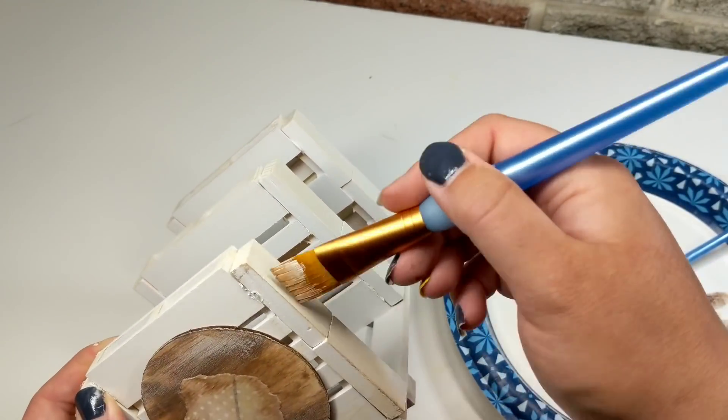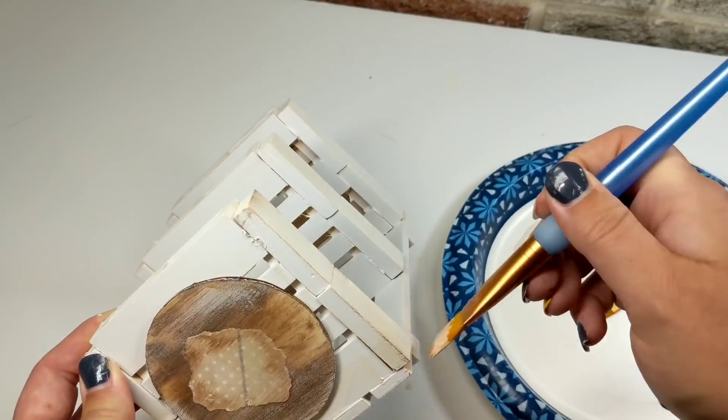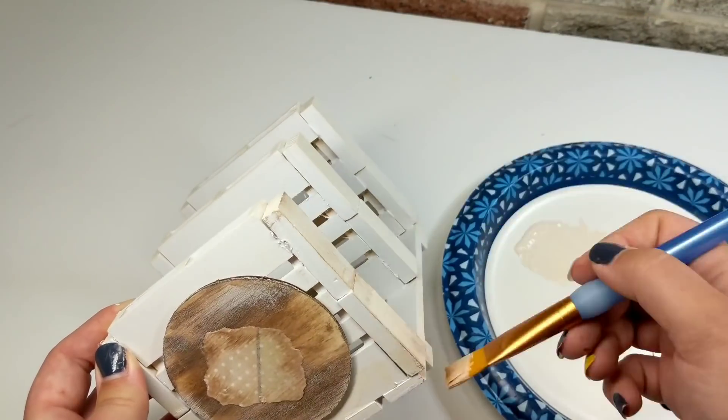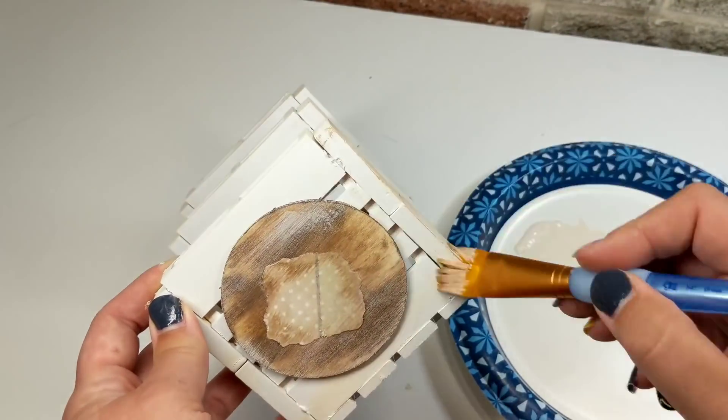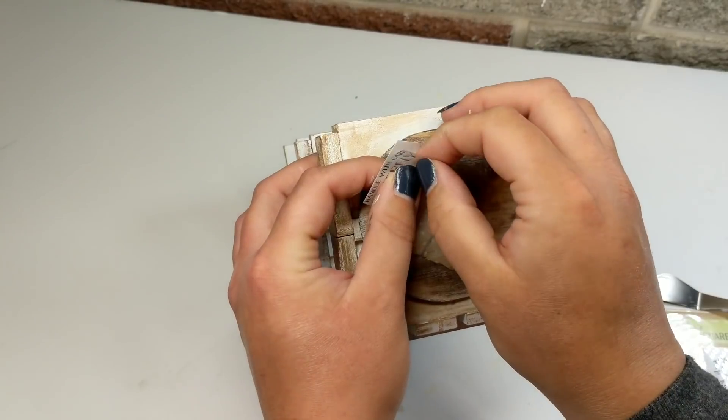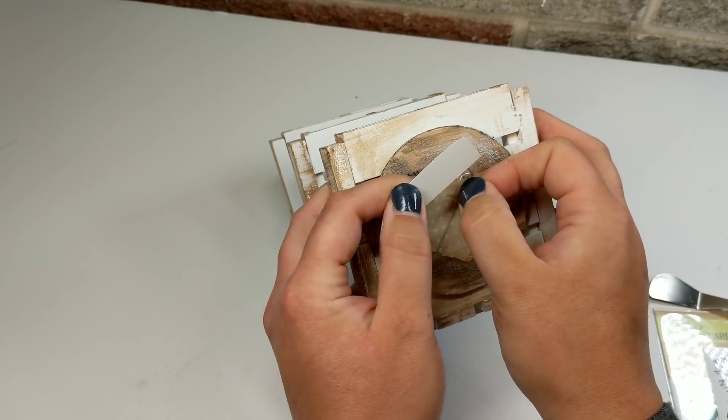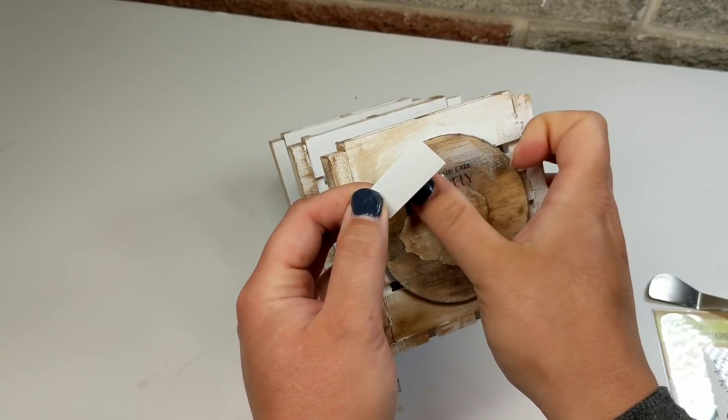And finally, once it dried, I also put some Mod Podge over it, which you want to do before you put any type of stickers or transfers because they will not stick very well if you do not do that. I'm sure most of you are familiar with the Dollar Tree transfers and these new ones.